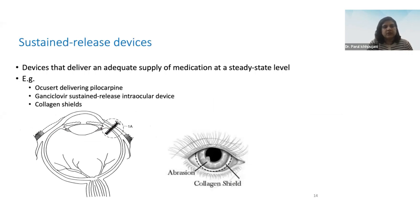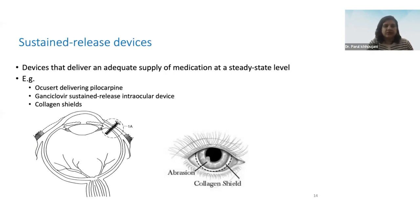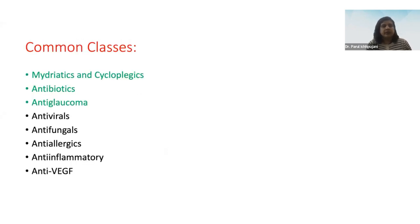In certain diseases, sustained-release devices are implanted within the eye so the drug is released steadily over a longer period. Earlier there were Ocusert implants delivering pilocarpine. Now ganciclovir implants in the form of a screw are used, especially for CMV retinitis in HIV patients. There are also collagen shields soaked in the drug and implanted over the eye for sustained drug delivery. Drug classes in ophthalmology include mydriatics and cycloplegics, antibiotics, anti-glaucoma drugs, antivirals, antifungals, anti-allergics, and anti-VEGF, among others. Today we cover the first three.